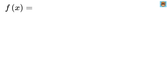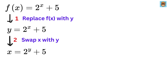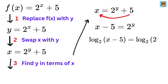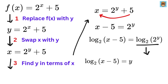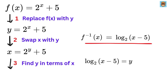Consider this exponential equation f of x equals 2 raised to the power x plus 5. First, replace f of x with y, so y equals 2 to the x plus 5. Swap x and y to get x equals 2 to the y plus 5. Find y in terms of x: take 5 to the left-hand side to get x minus 5 equals 2 to the y. Now take the logarithm with base 2 on both sides. Using the logarithmic rule, we get y times log base 2 of 2, which equals 1, so y equals log base 2 of x minus 5. That is the inverse of f of x.